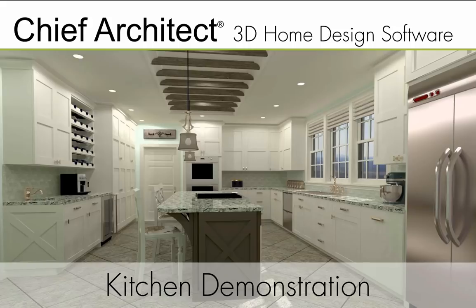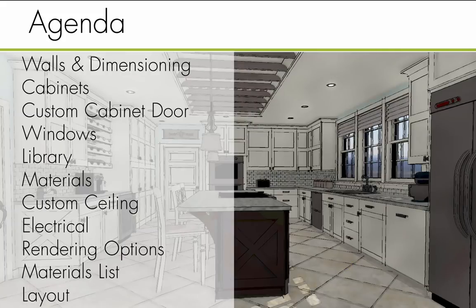My name is Kayla and I'll be going through this kitchen design with you today. We're going to start by drawing out the walls and dimensioning the space, go through base cabinets, wall cabinets, full heights, and different configurations. We'll create a custom door style, work with doors and windows, explore the library, go through material properties, create a custom ceiling, work with electrical options, rendering options, a cabinet schedule, and create a layout — a construction document for our kitchen.